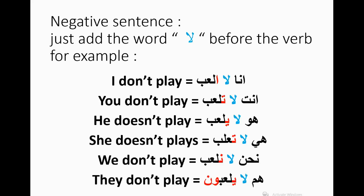Negative sentence: just add the word لا before the verb and keep the conjugation. For example, I don't play: أنا لا ألعب. You don't play: أنت لا تلعب. He doesn't play: هو لا يلعب. She doesn't play: هي لا تلعب. We don't play: نحن لا نلعب. They don't play: هم لا يلعبون.